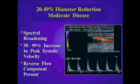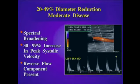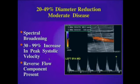A moderate stenosis is classified as 20 to 49 percent diameter reduction. In this example, we see an increase in spectral broadening up to a 99 percent increase in peak systolic velocity compared to the proximal segment. It is important to recognize that we maintain a normal triphasic appearance with a consistent reverse flow component.